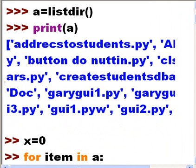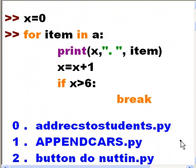Very ugly. I want it to be neater so I can read it, and I only want a few of them, let's say six. So I say x equals zero, then for item in a, this is what I want you to do for each item in a, that list directory was assigned to a.